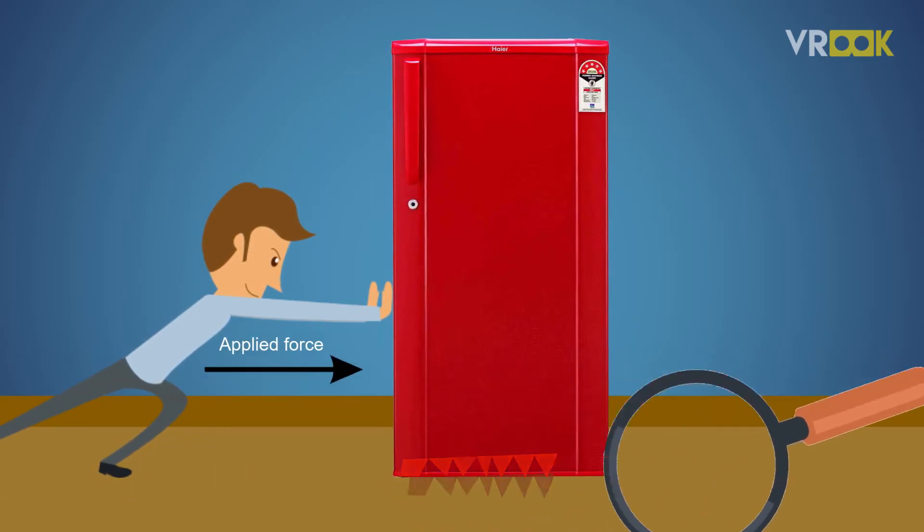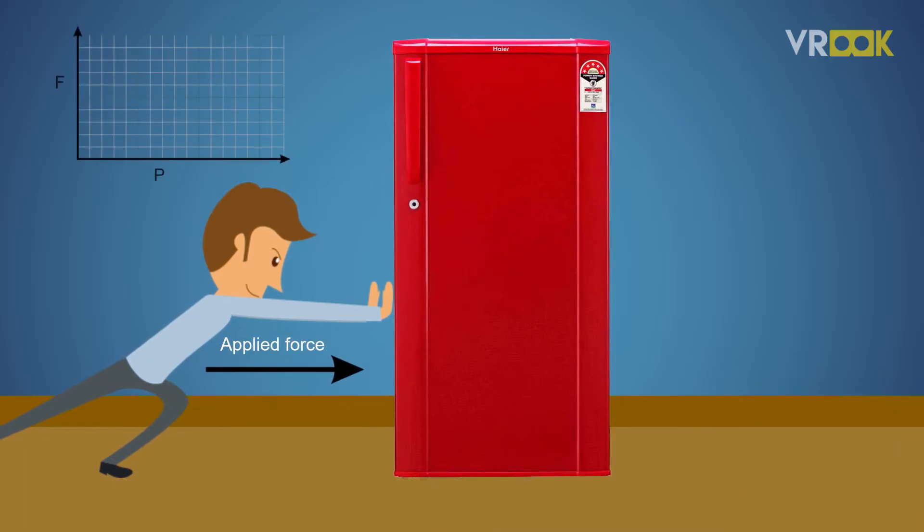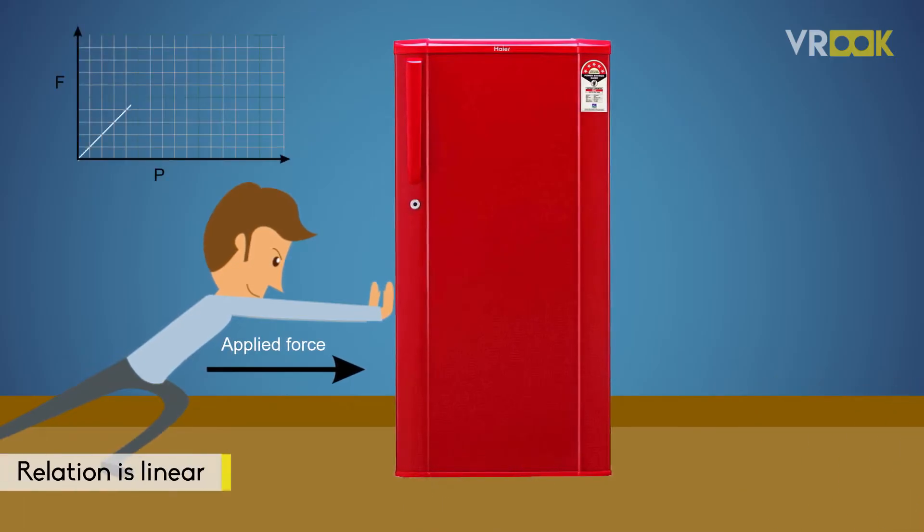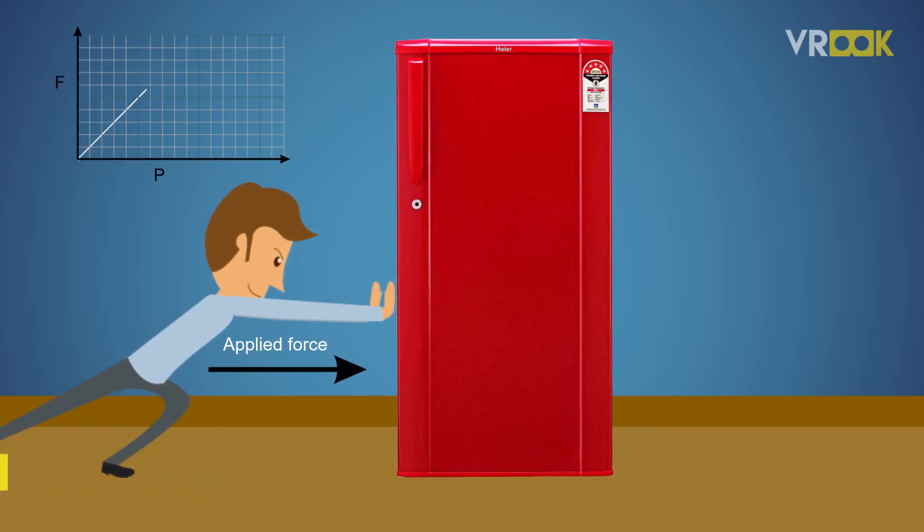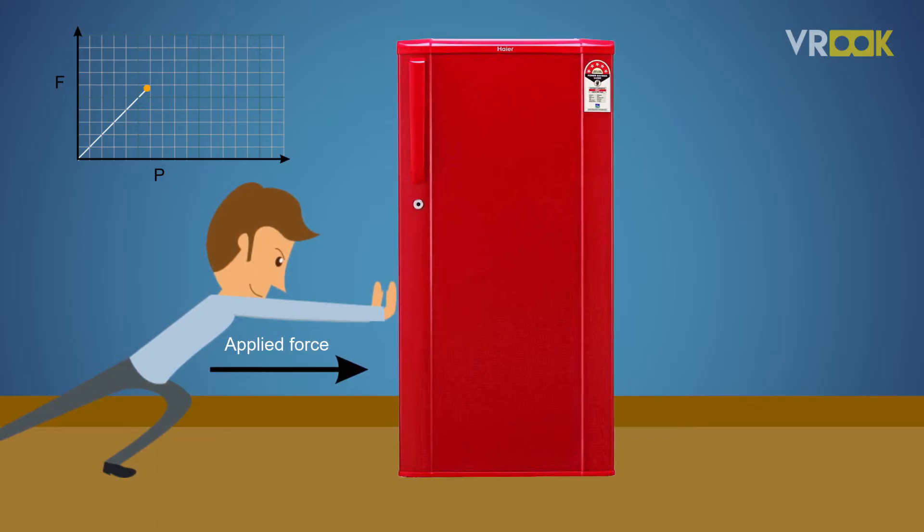As we can see from the graph, the relation is linear—frictional force will be equal to your applied force on the fridge. Now you are really determined to push it. You push the fridge with all the force you've got.